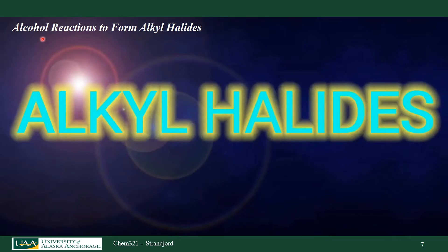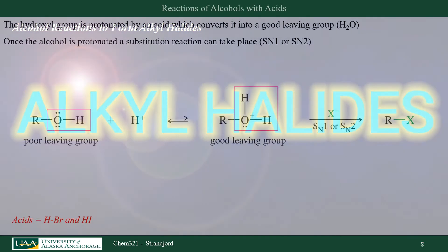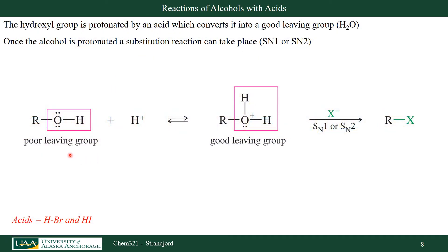So let's look at reactions of alcohols to form alkyl halides. If we can make alkyl halides, we can do a lot of chemical reactions. The hydroxyl group is such a poor leaving group that we first need to activate it and make it into a good leaving group. One way to do that is to put in some acid, which protonates the alcohol, making the whole group a good leaving group — because once it leaves, it's just water — and then it can be attacked by a good nucleophile.